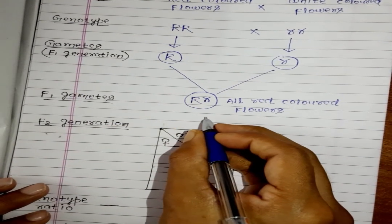So what Mendel has done? He has again done the self-fertilization between these. That is self-fertilization. For self-fertilization from this, if you will fertilize this.